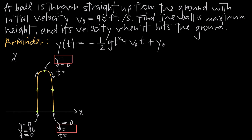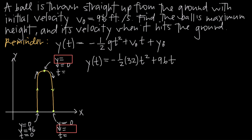Now that we've drawn a diagram, we want to fill out our position function. y of t equals negative one-half times the gravitational constant times t squared plus v-zero times t plus y-zero. Since the problem is in feet, we use 32 for the gravitational constant — use 9.8 if working in meters. This function assumes constant gravity. So we get y of t equals negative one-half times 32 times t squared plus 96t plus 0, which simplifies to y of t equals negative 16t squared plus 96t.